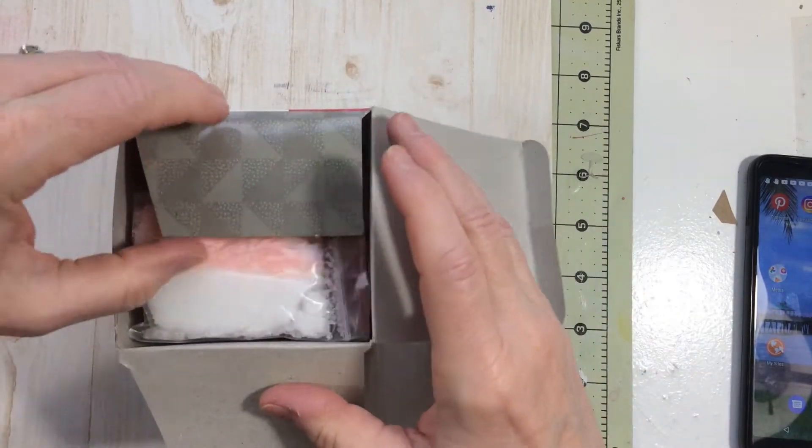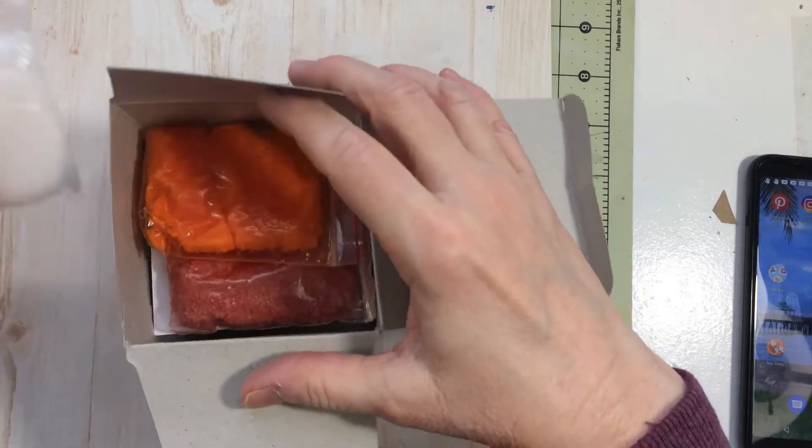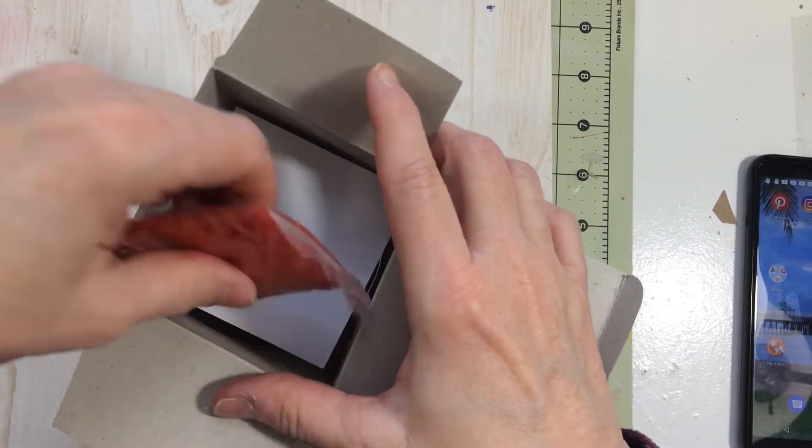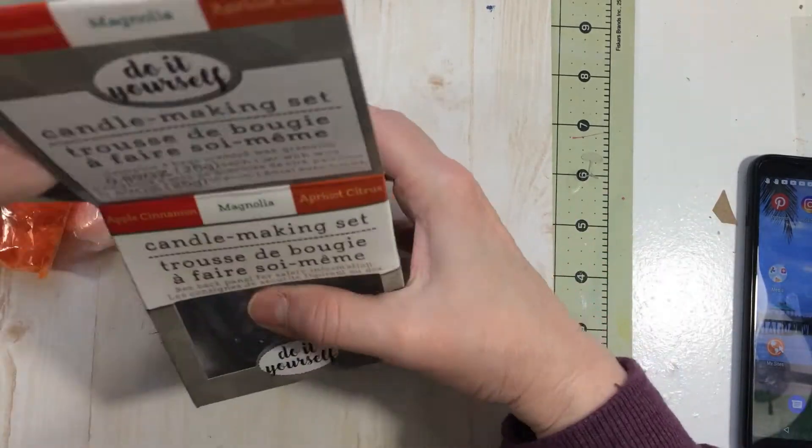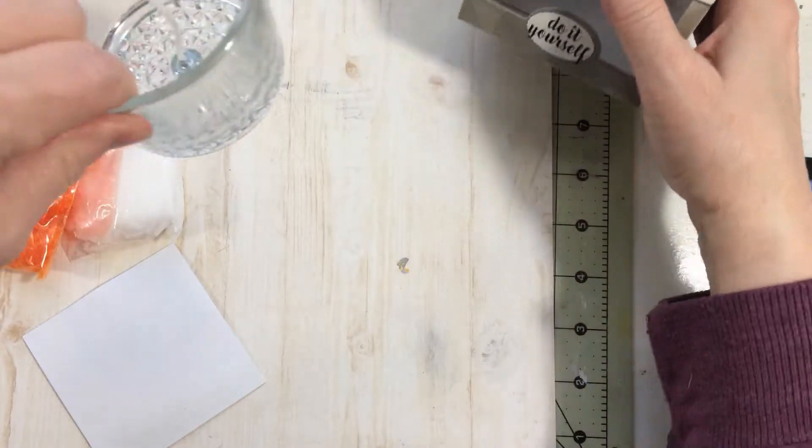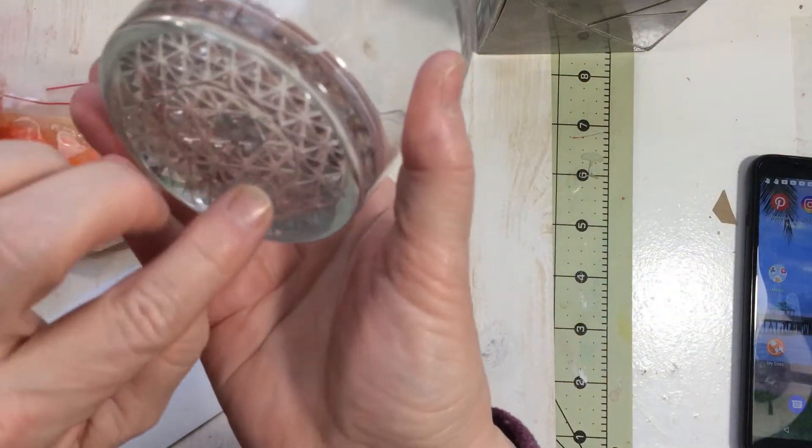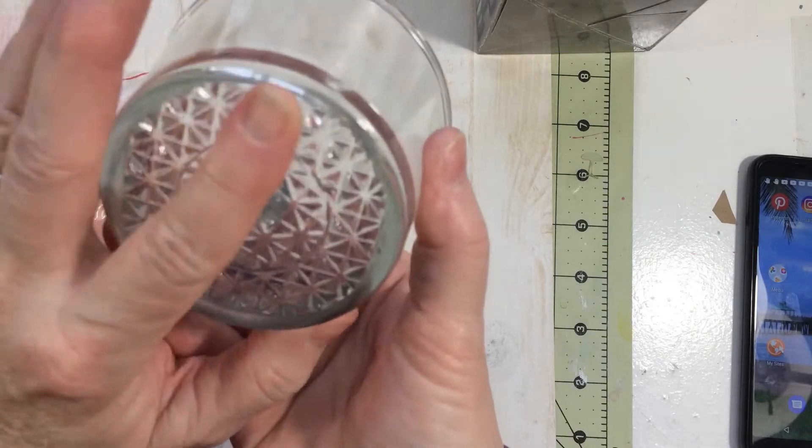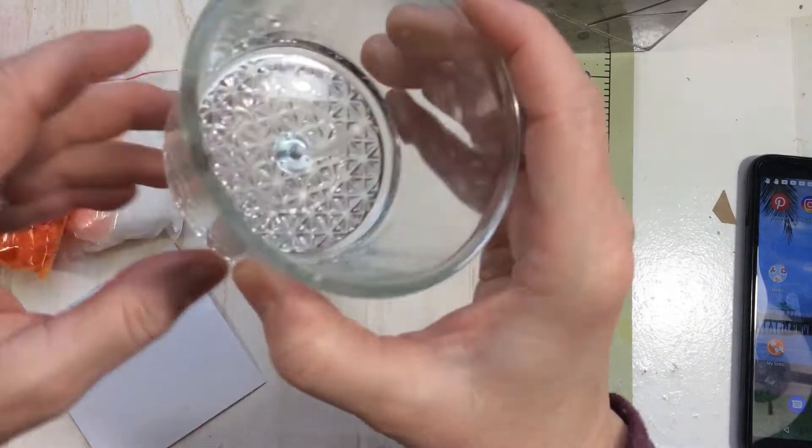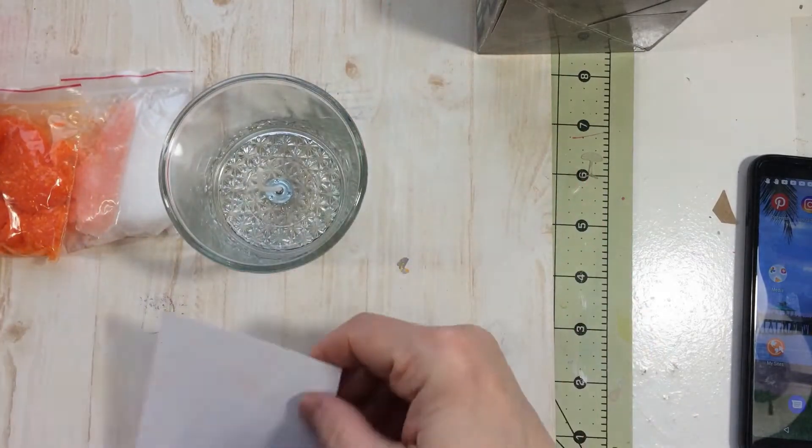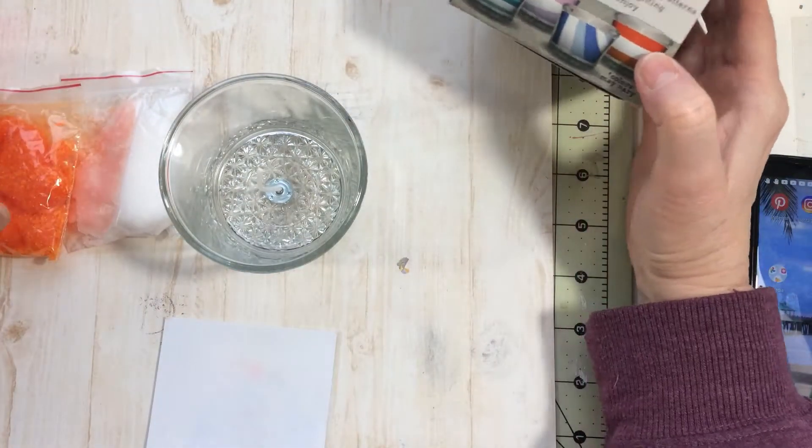This one here is magnolia and it comes with this cute little jar or glass jar. Look at the cute decorations on the bottom, it's like engraved in there and your wick's all ready to go.